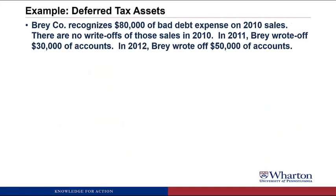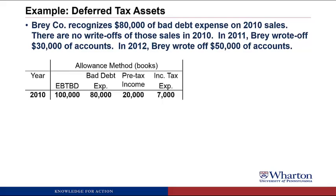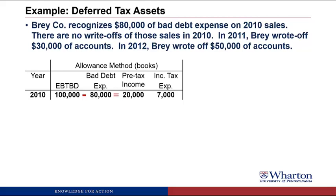Let's look at an example of a deferred tax asset. Bry Company recognizes $80,000 of bad debt expense on sales made during 2010. There were no write-offs in 2010. In 2011, Bry wrote off $30,000 of accounts as uncollectible, and in 2012, $50,000 of accounts as uncollectible. On the financial statements, we use the allowance method — recognizing bad debt expense in the same period we make the sales. With EBITDABE of $100,000, bad debt expense of $80,000 gives us pre-tax income of $20,000, times 35% gives income tax expense of $7,000.